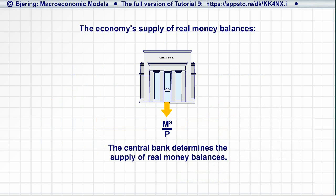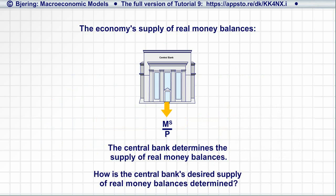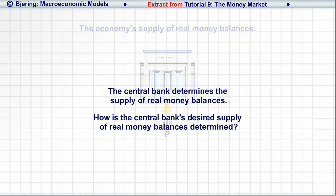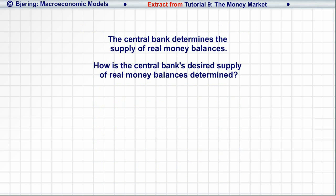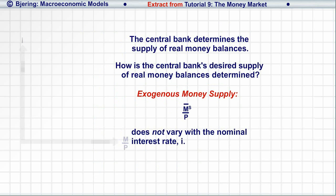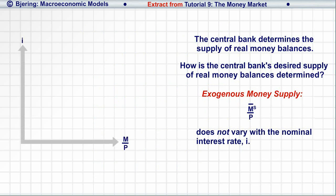But how is the money supply determined? In practice, there are many considerations behind the central bank supply of money, considerations we won't attempt to capture in our model. Thus, we assume that in this model the money supply is exogenous, M bar. That is, the money supply doesn't vary with the nominal interest rate. Rather, the supply curve for real money balances is vertical at M bar over P.